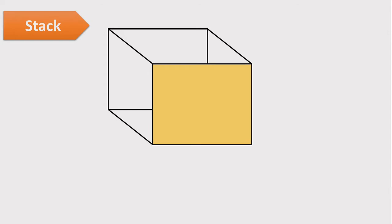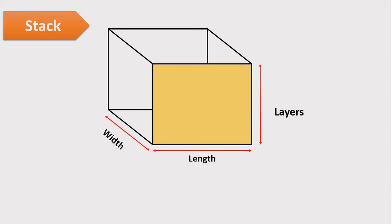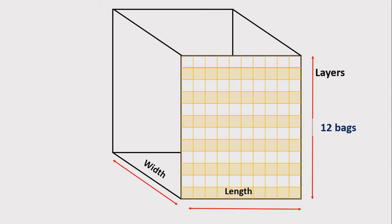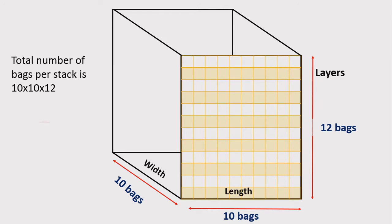Considering each stack, it consists of width, length, and height. The height is also known as layers, as the bags are layered on each other up to the desired height. This stack should consist of 12 bags on the layer side, which is ideal, 10 bags on the length side, and 10 bags on the width side. So the total number of bags per stack is 10 × 10 × 12 = 1200 bags.